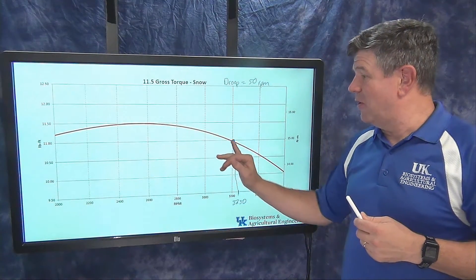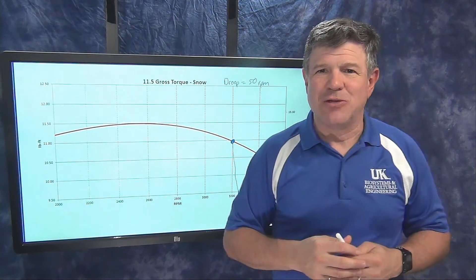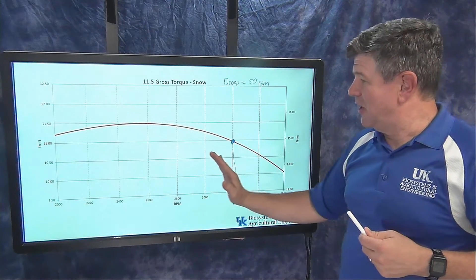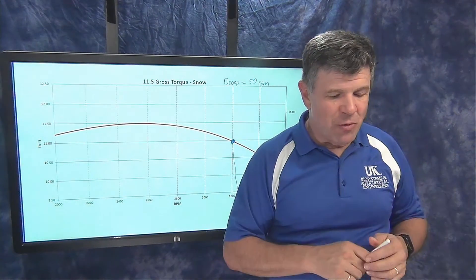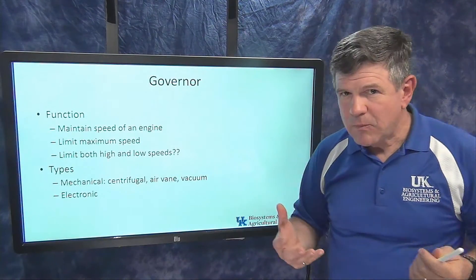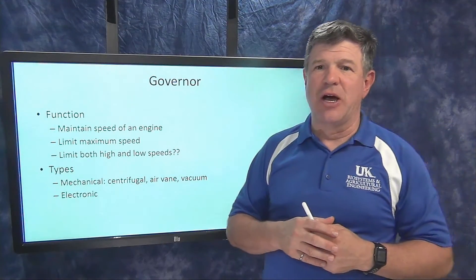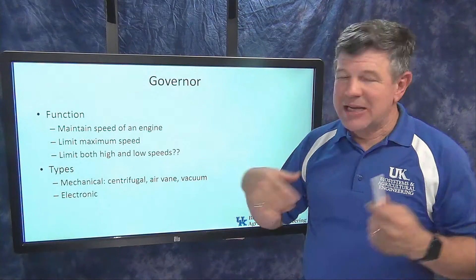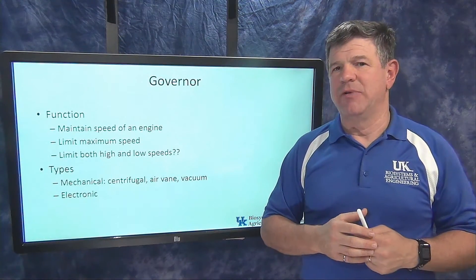I can choose that governor location at many different points and actually change the shape of the torque-speed curve a little bit. I can't change the top, but I can change what the governor is doing at different points along that curve. That's why droop is important — that's something we need to look at. To summarize what we've talked about with governors: the main function you need to understand is that the governor maintains the speed of the engine. That's its main job.